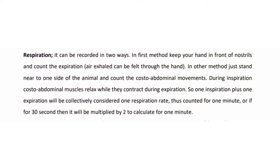Respiration rate can be recorded in two ways. In the first method, keep your hand in front of the nostrils and count the expirations. In the second method, stand near one side of the animal and count the costo-abdominal movements. During inspiration, costo-abdominal muscles relax; they contract during expiration. One inspiration plus one expiration is collectively considered one respiration. It is counted for one minute, or for 30 seconds and multiplied by two.